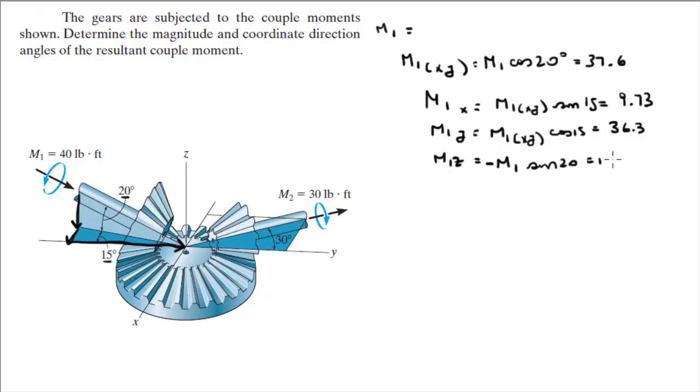And of course it's negative, there's a negative over there. So now that we have the Cartesian vector form, let's write it a little more formal: 9.73 in the i, plus 36.3 in the j, minus 13.7 in the k.